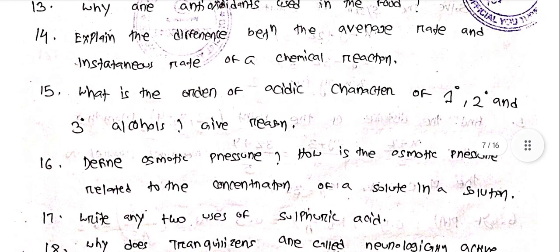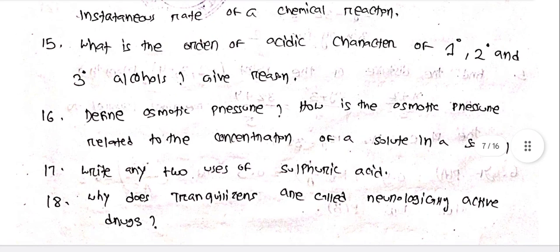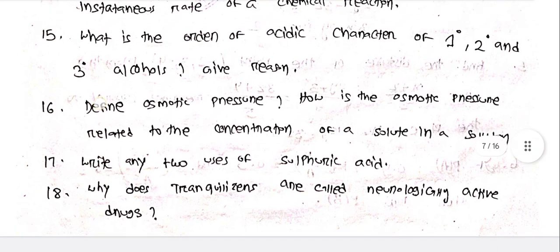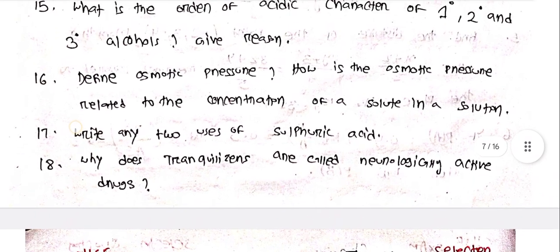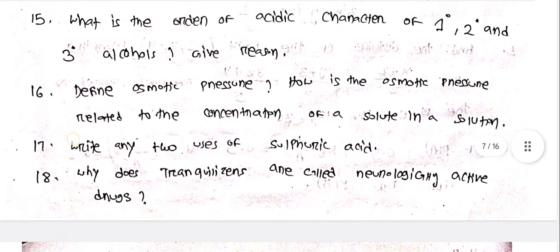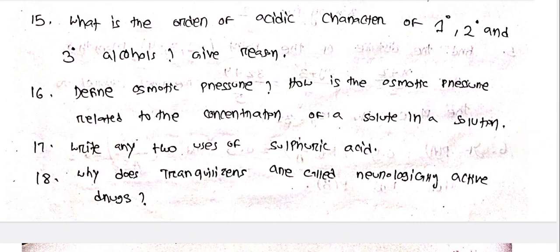Explain the difference between average rate and instantaneous rate of a chemical reaction. What is the order of acidic character of primary, secondary, and tertiary alcohols? Give a reason. Define osmotic pressure. How is osmotic pressure related to the concentration of a solute in a solution?